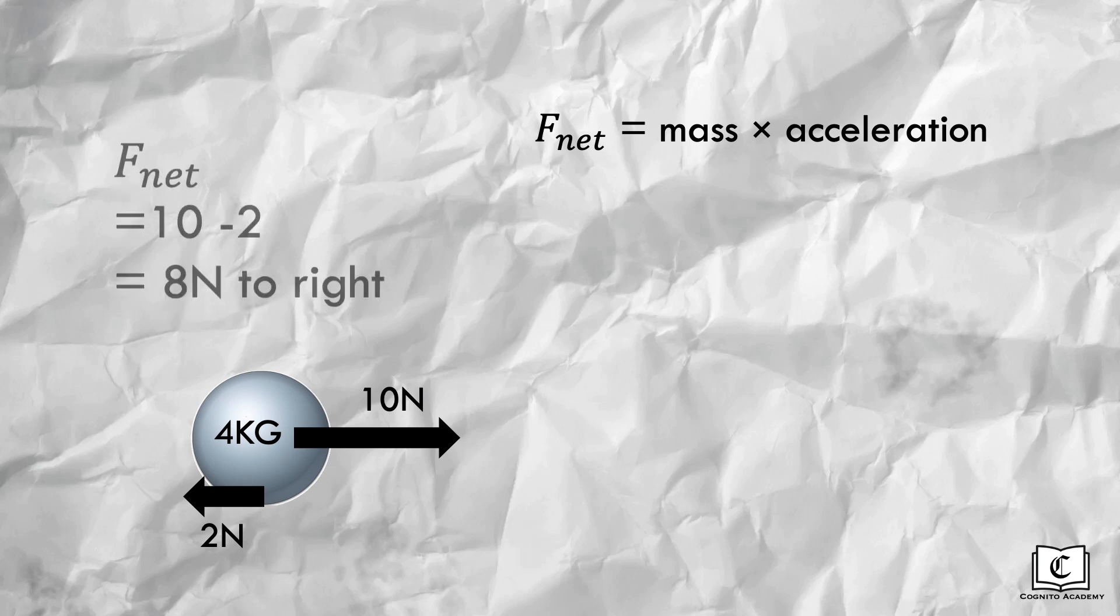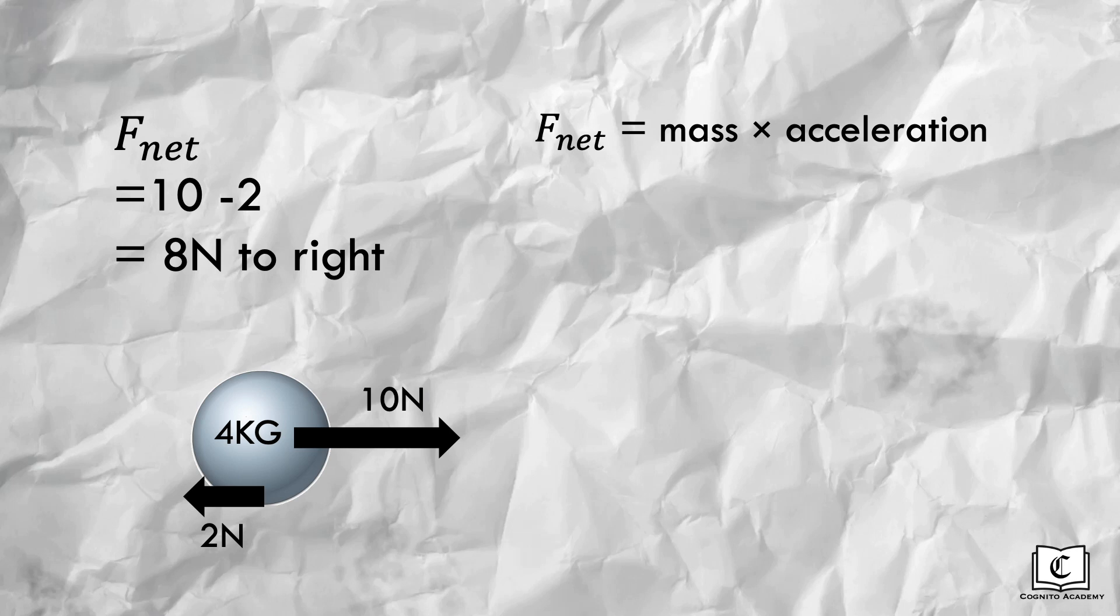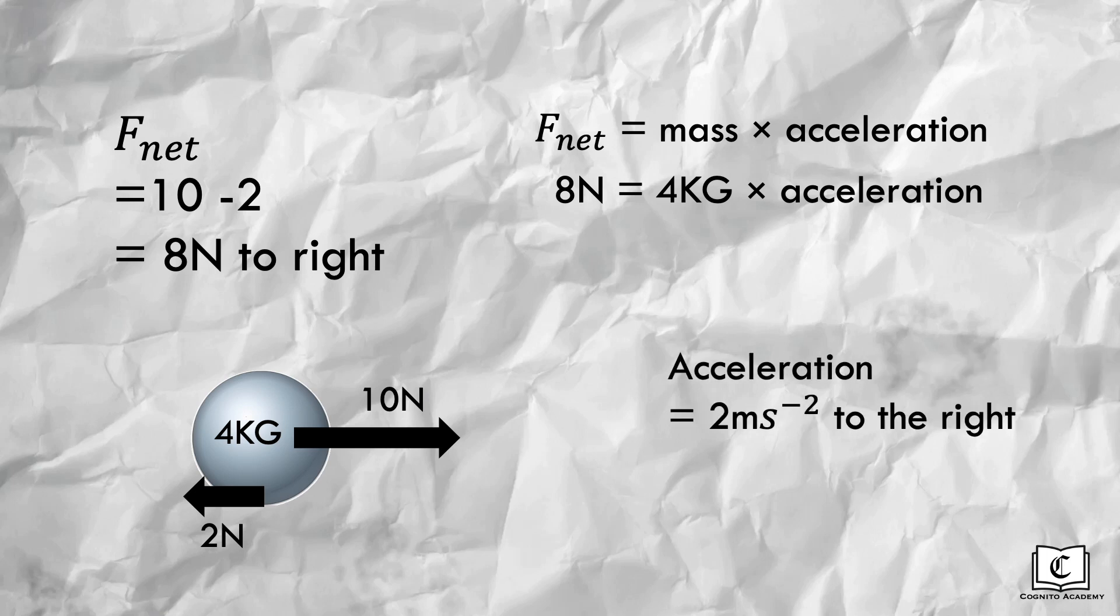We know that Newton's second law states that the mass of the ball multiplied by its acceleration will give us the resultant force acting on the ball. So first, we will need to find the resultant force acting on the ball, which is 8 newtons to the right. With the value of this resultant force, and because we know the mass of the ball, the acceleration on the ball is simply 8 newtons divided by 4kg, which will give us an acceleration of 2 meters per second squared to the right.